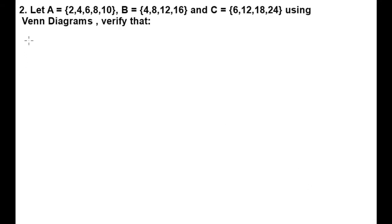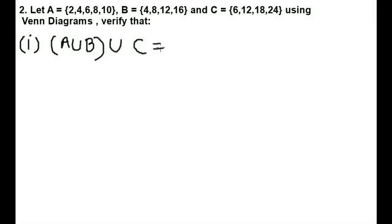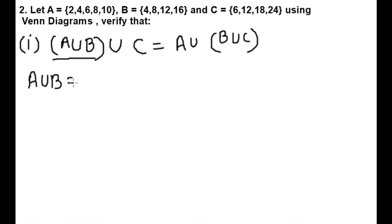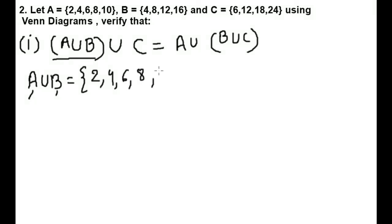The first verification is A∪B∪C equals A∪(B∪C). First we will find A∪B. A∪B means we have to write all elements of A and B one time without any repetition. Elements of A are 2,4,6,8,10 and elements of B are 4,8,12,16. Since 4 and 8 are already in A, we get A∪B = {2,4,6,8,10,12,16}.